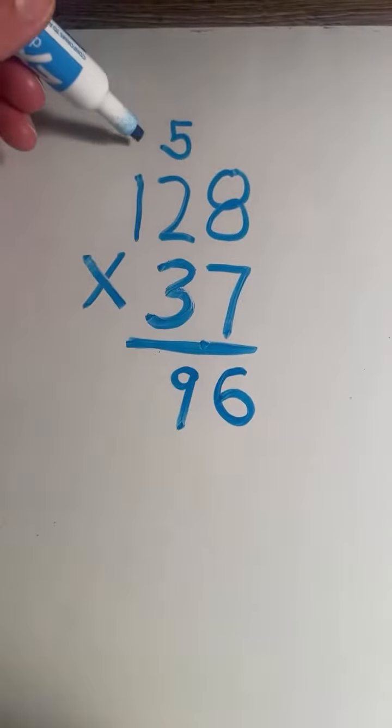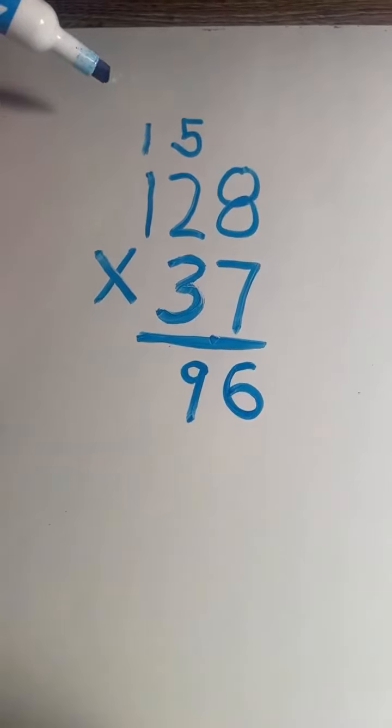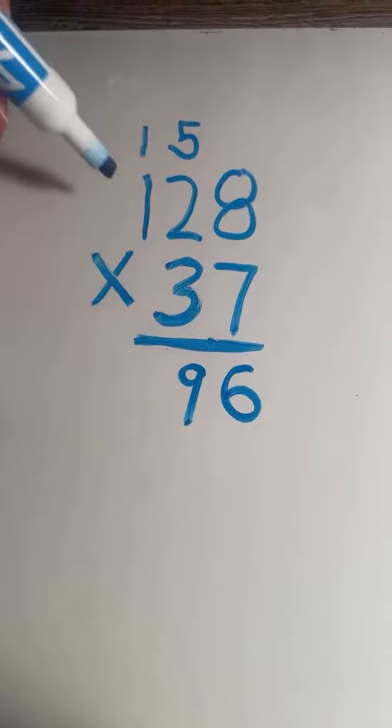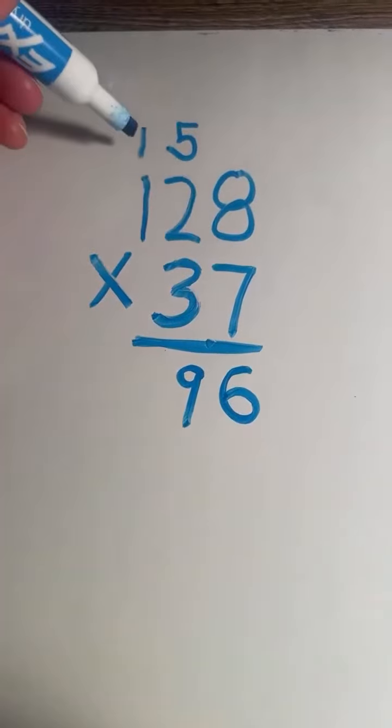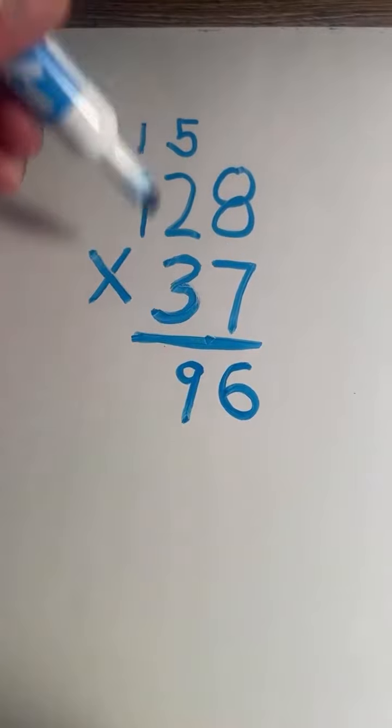The 1 in 19 gets carried over to the hundreds place. Next we multiply 1 times 7. We have to add the 1 that we carried over. 1 times 7 equals 7, 7 plus 1 equals 8.